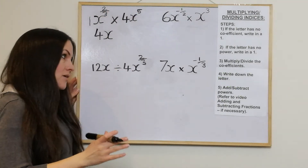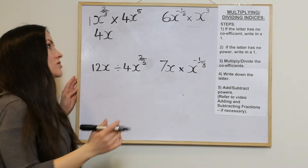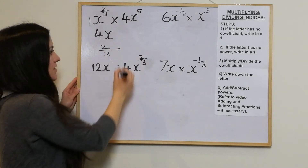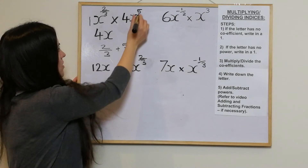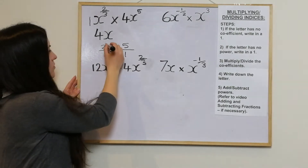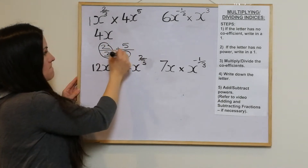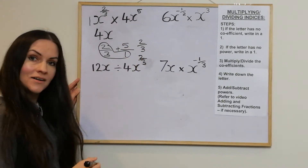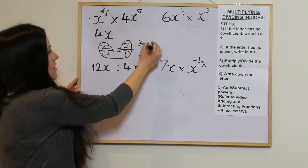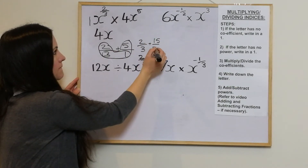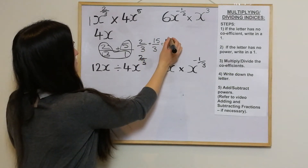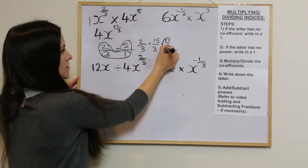Now if some of you remember, my second video was about adding and subtracting fractions. We're doing 2 thirds add 5. Write 5 as 5 over 1. Using the boot method: everything there times by 1 stays as 2 over 3, then everything on the other side times by 3 becomes 15 over 3. Altogether that's 17 over 3. So the power is 17 over 3, giving us 4x to the power of 17 thirds.